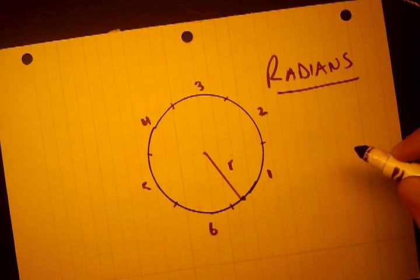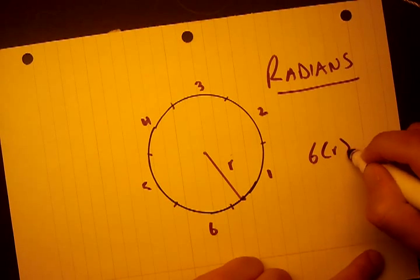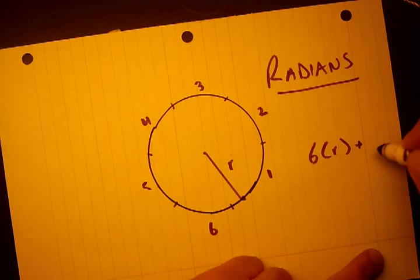So it looks like there's about six times r plus some little piece. We'll just call it p equals the circumference of the circle.